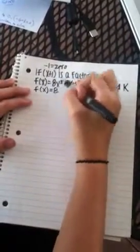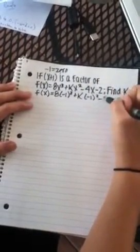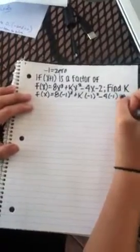So it's going to be f(x) = 8(-1)³ + k(-1)² - 4(-1) - 2.